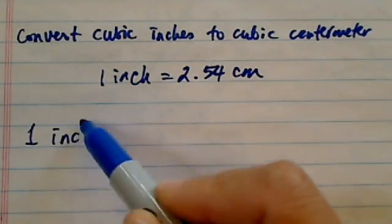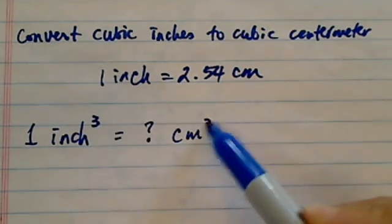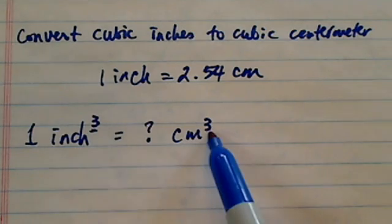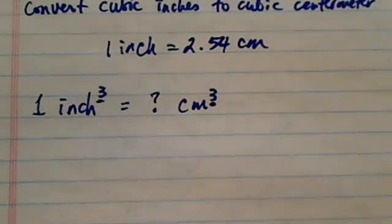One inch cubed is equal to what cubic centimeters? Since it's cubed, you might have to multiply the conversion factor three times, and here's why.